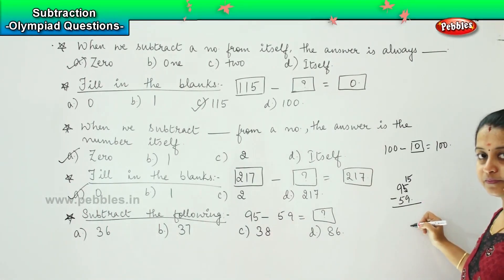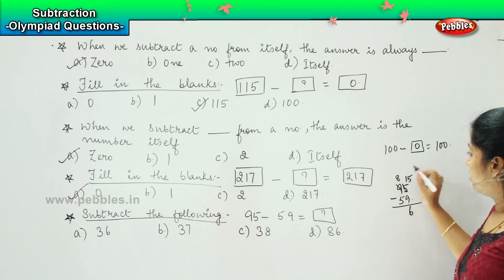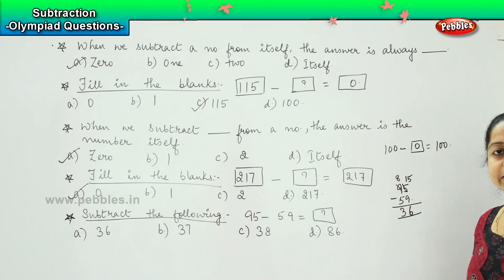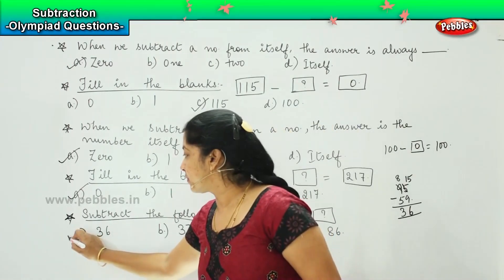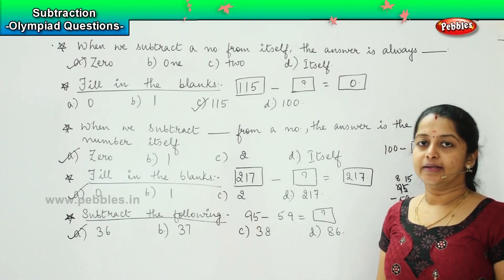15 minus 9 is? Good, 6. So this will be reduced by 1. So 8 minus 5 is? 3. So what is your answer here? It is a, 36. Clear? Shall we move ahead?